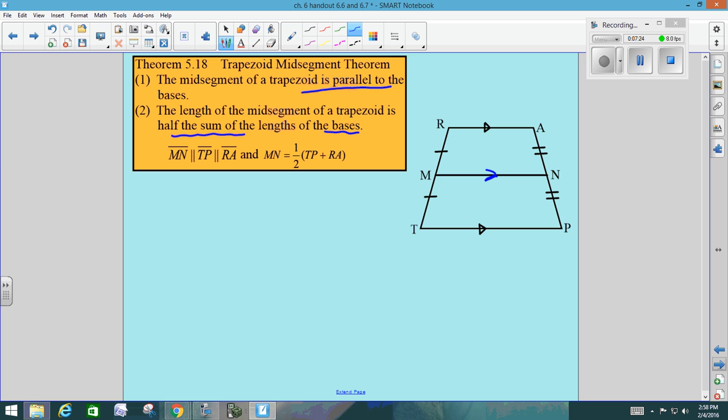And the length of the mid-segment is half the sum of the bases. When you hear the word sum, what math operation do you think of? Addition. Good. And if you're going to take half of something, what else could you do? Divide it by 2. Good. So they're using this formula that the length of mn, the mid-segment, equals 1 half times the sum of the two bases. They would add these lengths together. You could also write it as mn equals the two bases, tp plus ra, divided by 2. Whatever floats your boat if you like dividing besides multiplying. It's still the same thing.